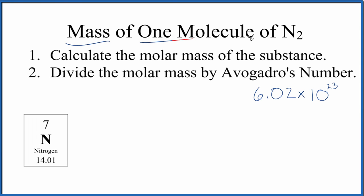Let's find the mass of one molecule of N2. This is diatomic nitrogen. All we have to do is calculate the molar mass for the substance, the N2, and then divide the molar mass by Avogadro's number. That'll give us the mass of one molecule of diatomic nitrogen.